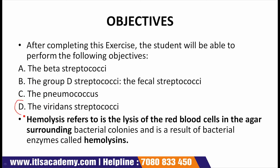Point 4 is the viridans streptococci. For this, state the normal habitat of the viridans streptococci and name 3 infections they may cause in humans. Also state the hemolytic reactions of the viridans streptococci on the blood agar.